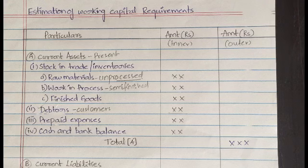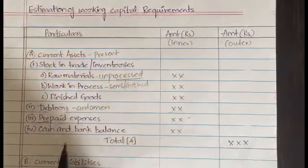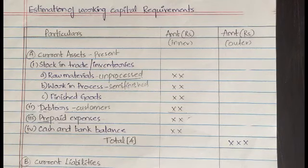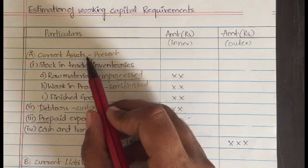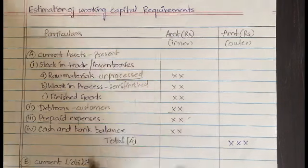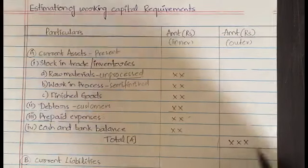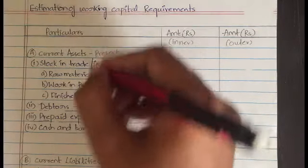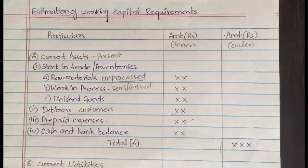Prepaid expenses are amounts paid before the start of your business or at the very start. They also have some amount. The next is cash and bank balance — cash available in the company at present and what is the bank balance of the company at present. So the things that come under current assets are: stock in trade, debtors, prepaid expenses, and cash and bank balance. All these will be added up, and the total is called as total of part A — the sum of all current assets.